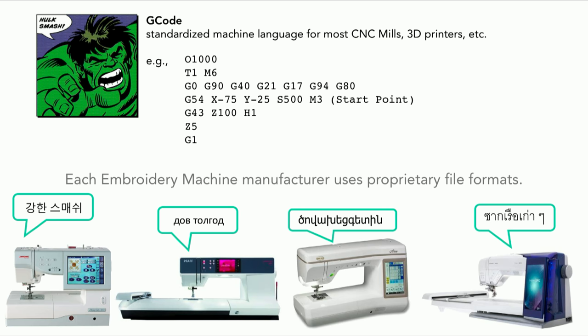Embroidery machines, however, each manufacturer has decided to have their own proprietary file format, which means that if I try to generate a file and pass it to you, you can't read it, because those machines speak fundamentally different languages. It is infuriating. You can buy software that will let you take a more universal file format, like an SVG, and translate that to your local machine.